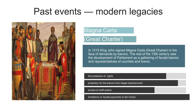The rest of the 13th century saw the development of Parliament as a gathering of feudal barons and representatives of counties and towns. By the end of the century, it had adopted its basic makeup of lords and commons, and it had established the right to approve taxation. It also soon acquired the right to approve new laws.